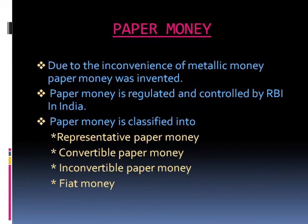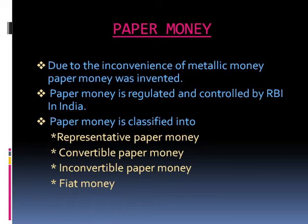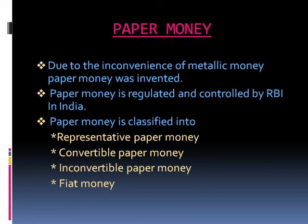Because of the defects of metallic money, the next invented money was paper money. During those days, people started keeping their gold with goldsmiths for safety, who gave depositors a receipt promising to return gold on demand — these paper documents represent the first stage of paper money. In the second stage, banknotes are used as money. In the third stage, banknotes are created and issued by the central bank, regulated and controlled by the RBI. Paper money is classified into representative paper money, convertible paper money, inconvertible paper money, and fiat money.